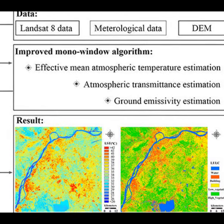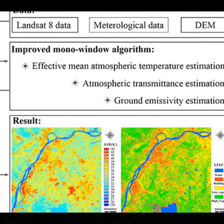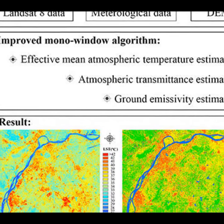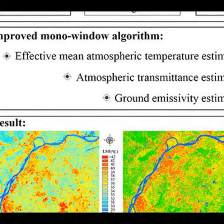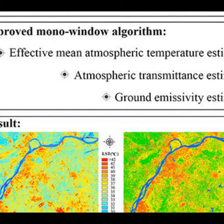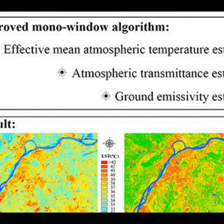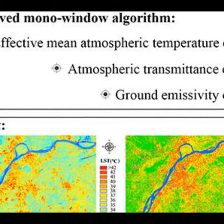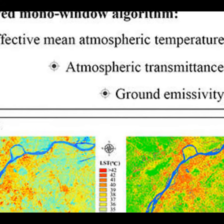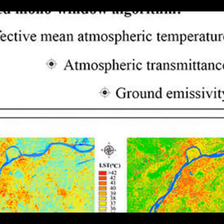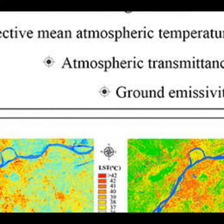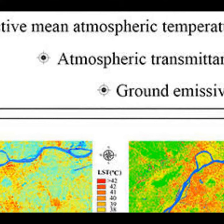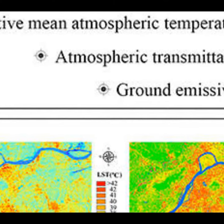The Landsat 8 satellite successfully launched with two thermal infrared bands on February 11, 2013, providing another opportunity for remote sensing of land surface temperature (LST). However, calibration notices issued by the USGS indicated that data from the Landsat 8 thermal infrared sensor (TIRS) band 11 had large uncertainty and suggested using TIRS band 10 data as a single spectral band for LST estimation.